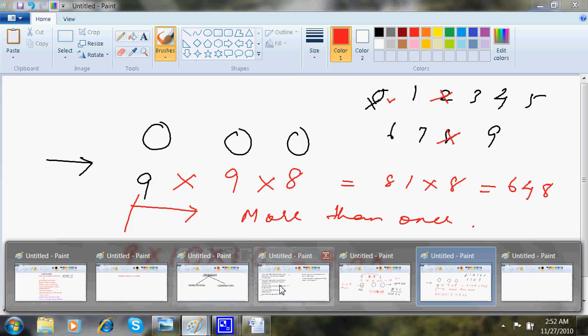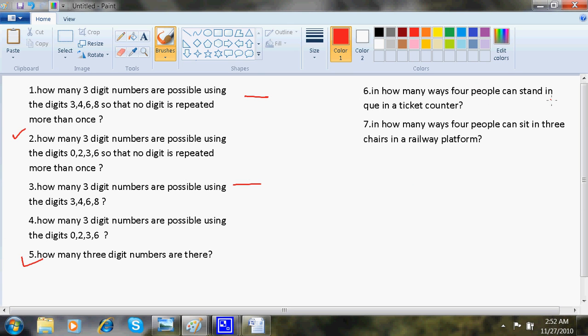Okay. In how many ways 4 people can stand in a queue, in a ticket counter? Basically, meaning, there is a ticket counter here. That people are standing. So, in how many ways they can shuffle? Basically, meaning, B can come here, C can come here and so on.